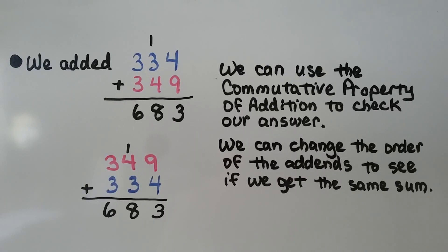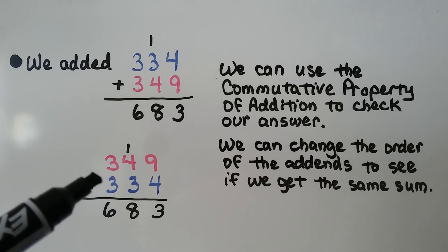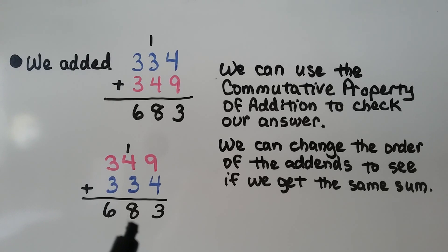We added 334 plus 349 and our sum was 683. We can use the commutative property of addition to check our answer. The commutative property says we can change the order of the addends and get the same sum. So we put 349 on top and 334 on the bottom: nine plus four is 13, regroup the ten, one plus four plus three is eight, three plus three is six. We get 683 just like before. Later I'll show you how to check addition using subtraction.